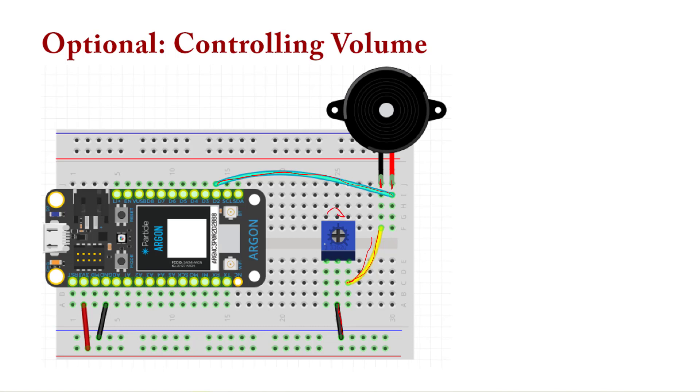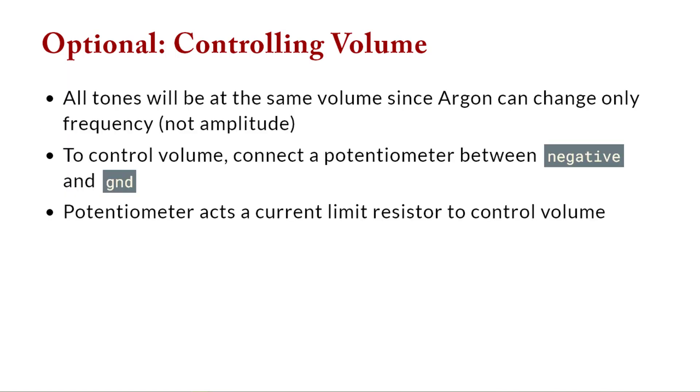And the other middle leg is connected to ground. And as you turn the knob, the amplitude will get louder. And as you turn the knob the other way, it'll get quieter. This is what you can use if you want to add a volume control to your device. Basically what's happening, it's a current limiting resistor, which we're familiar with, and that's how we control the value.